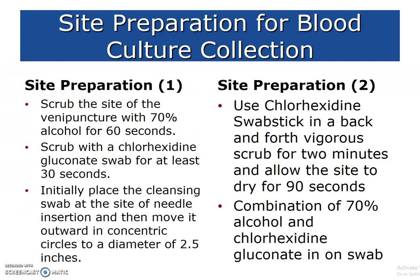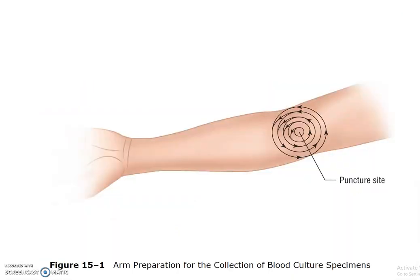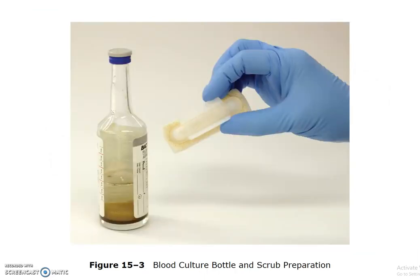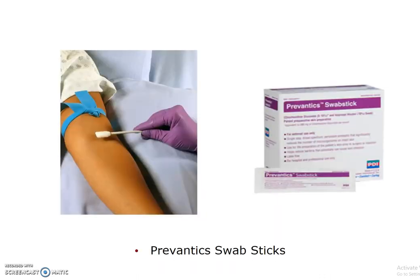There are two different ways to prep the site. One way uses chlorhexidine gluconate, which has alcohol and chlorhexidine mixed together. The first prep has alcohol first, then chlorhexidine separately; the second prep has them built in together. One technique uses a circular motion from the inside out; the other uses a back-and-forth vigorous scrub — it depends upon the device used to clean the site. This is a one-step, 30-second applicator. This is the chlorhexidine swab we will be using in class.